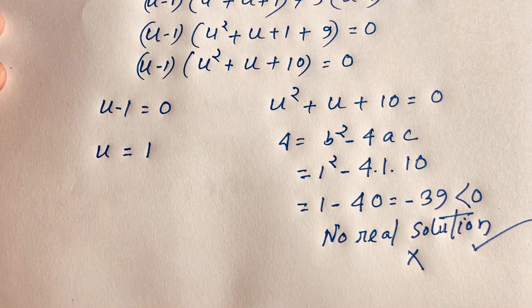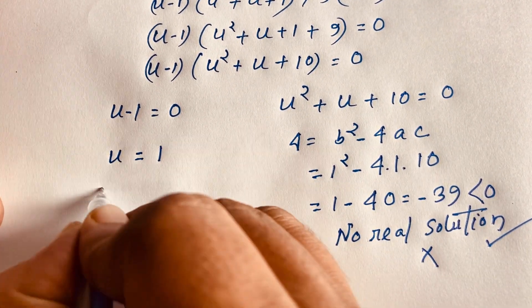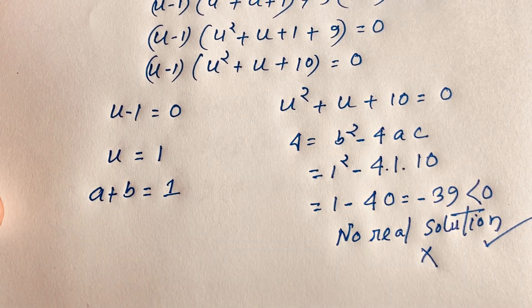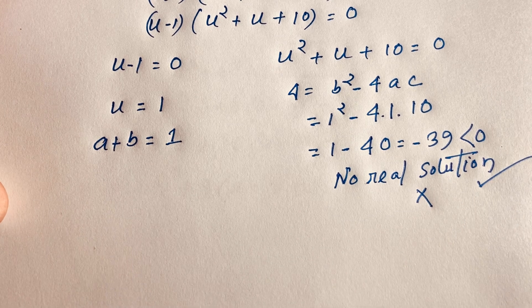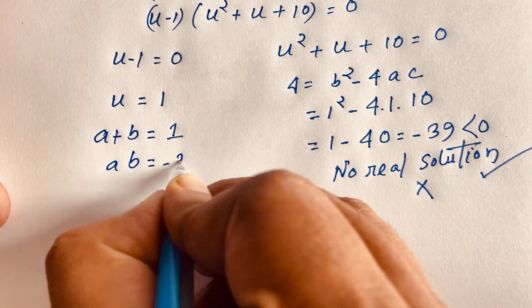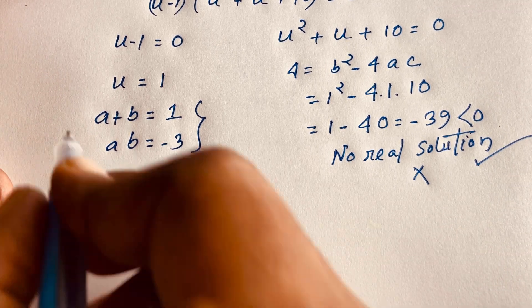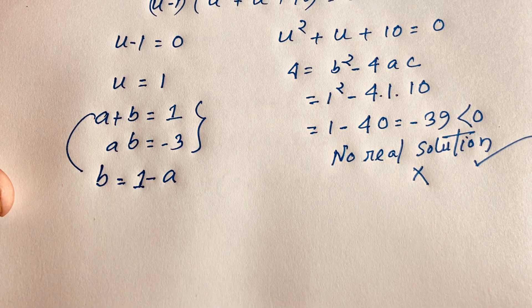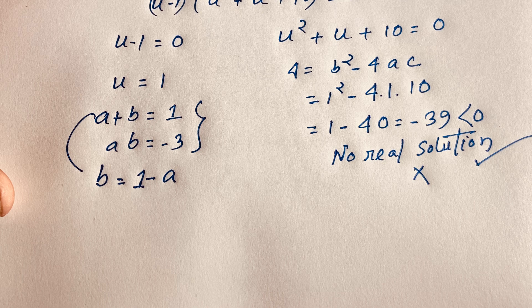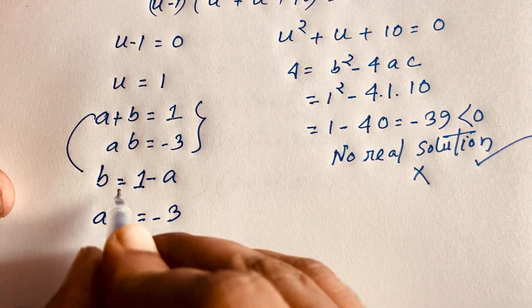From u minus 1 equals 0, we get u equals 1. Recall u equals a plus b, so a plus b equals 1. We also know ab equals negative 3 from our sixth equation. Our target is the value of a, so let b equal 1 minus a, and substitute into ab equals negative 3: a(1 minus a) equals negative 3.